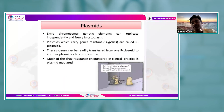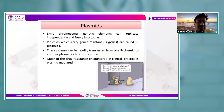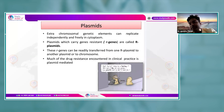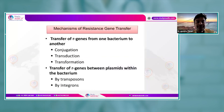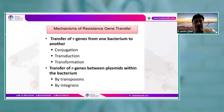Plasmids are extra-chromosomal genetic elements that replicate independently in the cytoplasm. They carry resistance genes called R genes, and are called R plasmids. These R genes can be readily transferred from one R plasmid to another plasmid or to the chromosome. Much of the drug resistance encountered in clinical practice is plasmid-mediated.